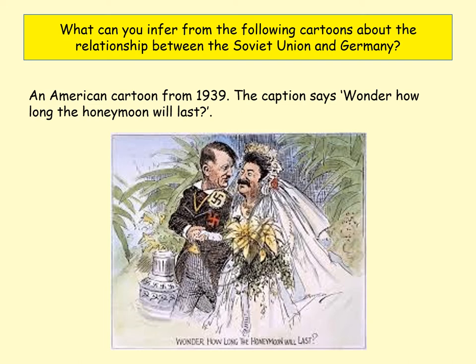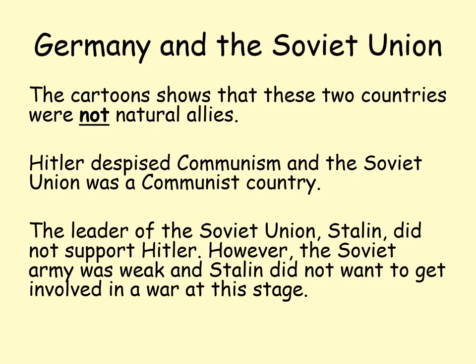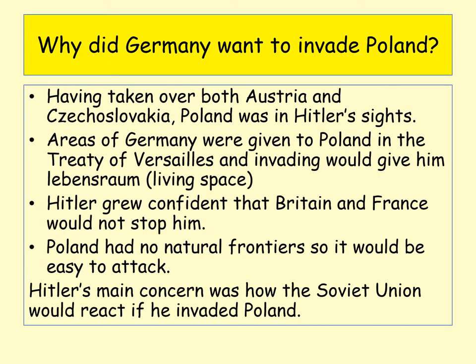The Soviet Union wanted time to rebuild their army. Stalin had actually got rid of a lot of his army generals in what was known as a purge in Russia in the 1930s. So the Soviet army was pretty weak in 1939, which is one of the reasons why Stalin was quite keen to sign this agreement. Just pause the video if you need to read any of this in more detail.